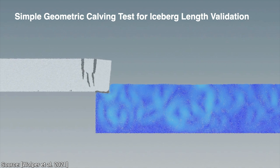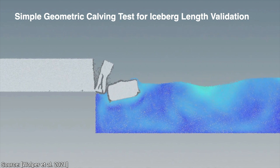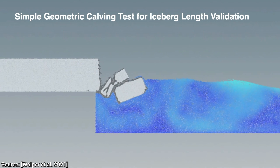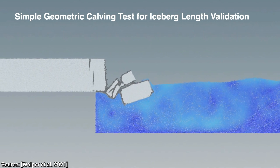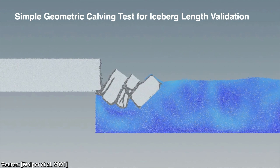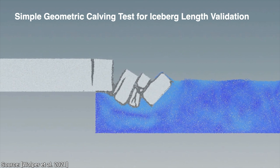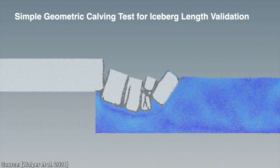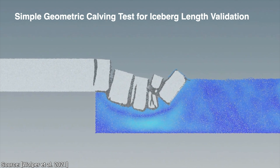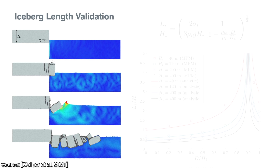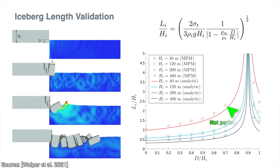Now let's ramp up the complexity of these simulations and hopefully give it a hard time. Real icebergs, real calving. The paper also shows plots that compare this experiment to the theoretical results, and found good agreement there too.